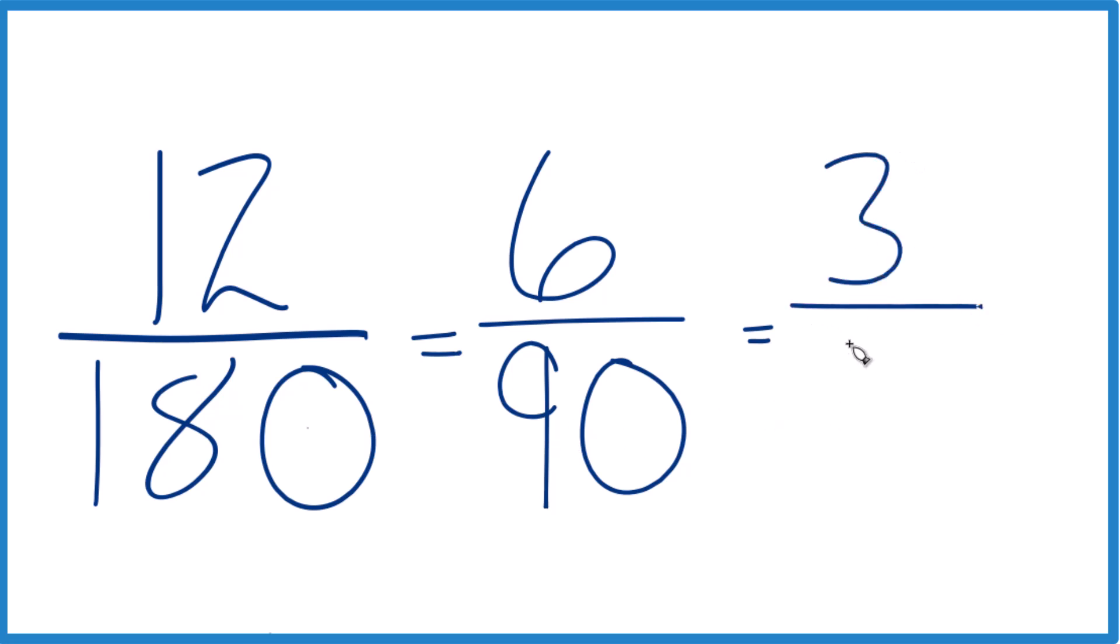90 divided by 2 is 45. And actually, I can't reduce this. Well, maybe I can.